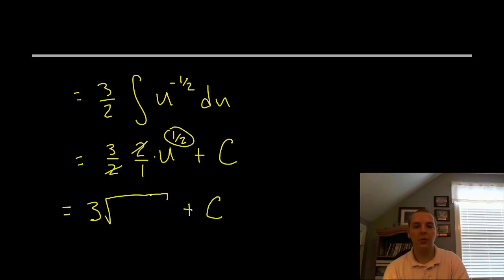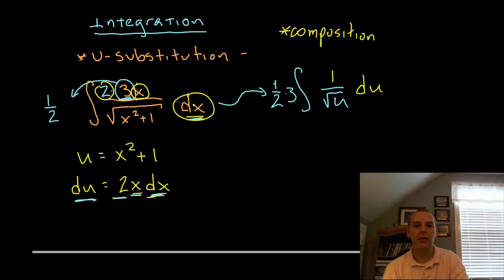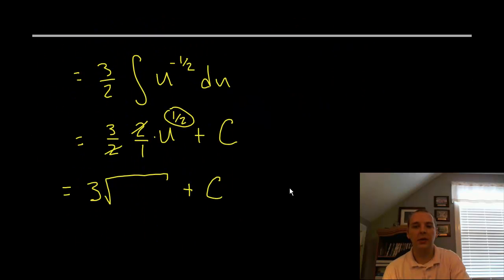And rather than saying 3 square root of u plus c, since the original integral was written in terms of x, our answer needs to be in terms of x. So if you look right here, here's what u is, u is the same as x squared plus 1. So for our last step we can take that u out and swap out an x squared plus 1 and we're done.